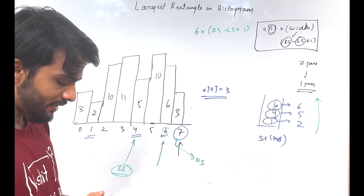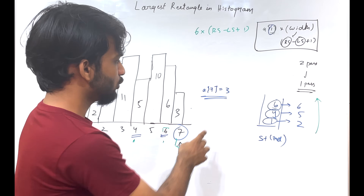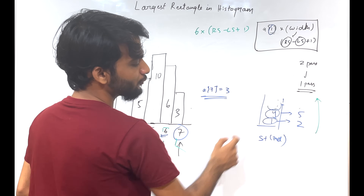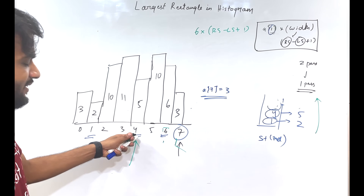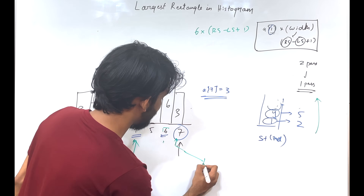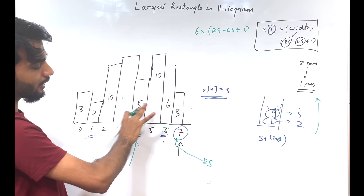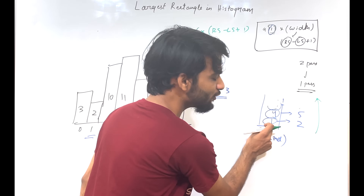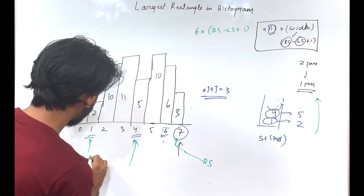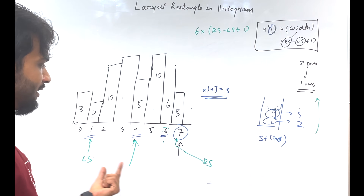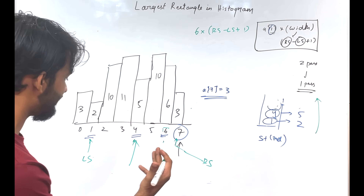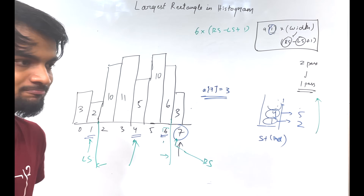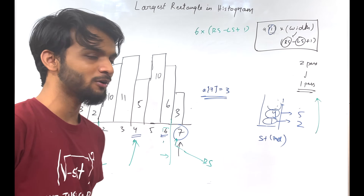Next, after computing for index 6, we remove it. Then we compare 3 with the next element, index 4 (height 5). Since 3 is smaller, index 4's right smaller is index 7, and its left smaller is the element before it in the stack, which is index 1 (value 2). So the width is 4 minus 1 minus 1, making sense. We figured out the left smaller and right smaller in a single step.